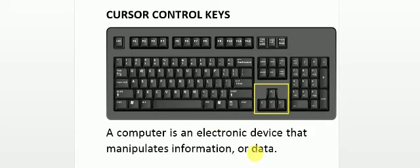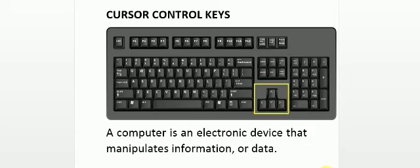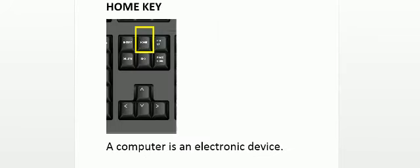Let's see how they work. Right now the cursor is here in front of the word 'data'. If I press the right arrow key of my keyboard, the cursor will move to the right direction. As you can see, the cursor moved to the right. In the same way, pressing the left arrow key moves the cursor to the left, the up arrow key moves it upward, and the down arrow key moves it downward.